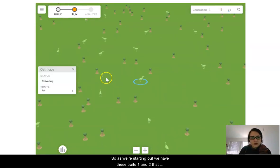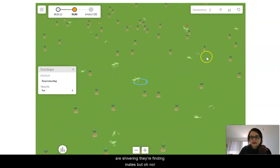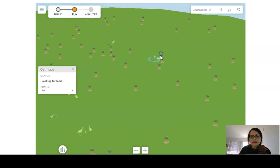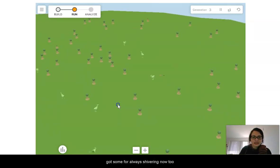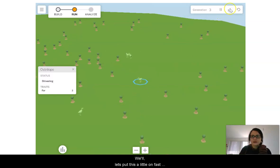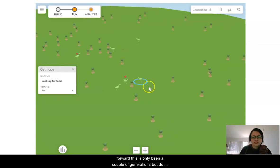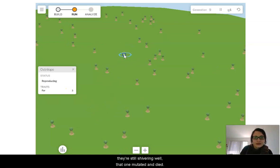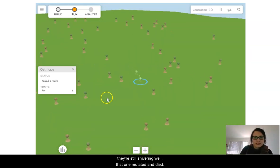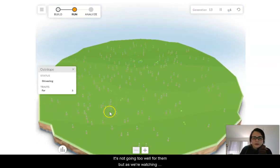So as we're starting out, we have these traits 1 and 2 that are shivering. They're finding mates, but oh no, that little guy died. All right, well this one, he's looking around for food. He's got some fur. Oh, he's shivering now too. Let's put this a little on fast forward. This has only been a couple of generations. But oh, oh, did you see that little red dot? Mutation happened. That's her little note. So they're still shivering, but well, that one mutated and died.